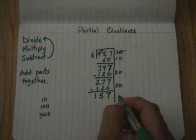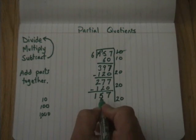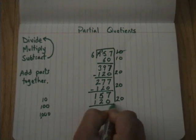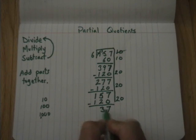So, I can do this one again actually. I'm going to divide 20. I'm going to multiply 20 times 6. And that's going to give me 120. And then I subtract. And now I'm down to 37, which I should be able to figure that out pretty easily.